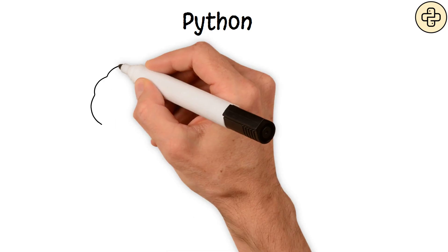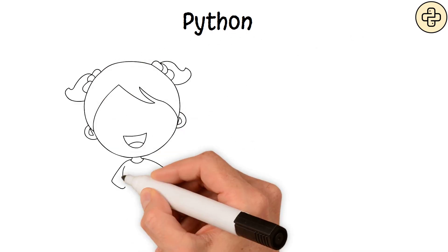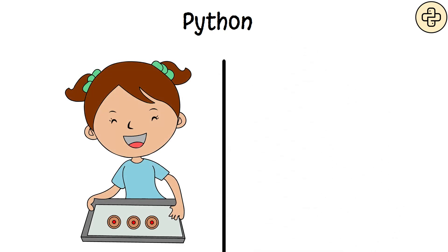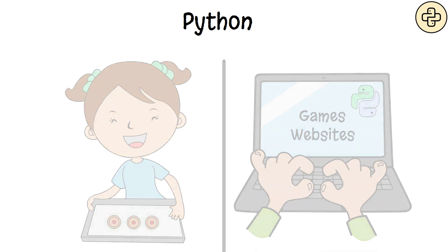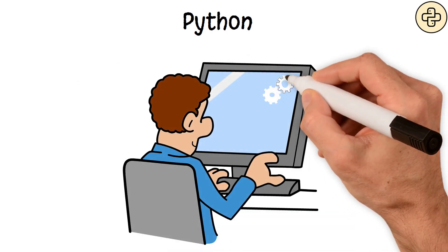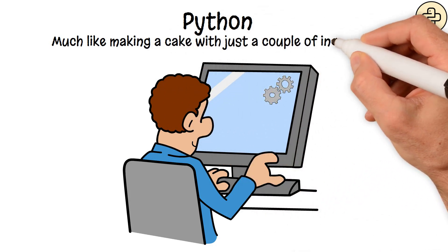Python. Think of Python as an easy-bake oven. Just like kids use an easy-bake oven to quickly make treats, beginners use Python to efficiently create projects like games or websites. It's simple, needing only a few instructions to achieve a lot, much like making a cake with just a couple of ingredients.